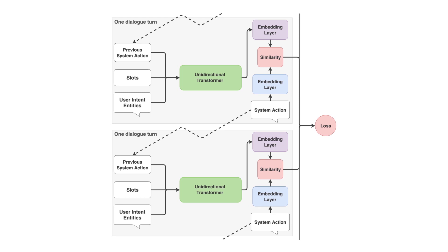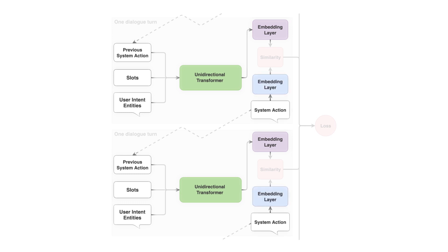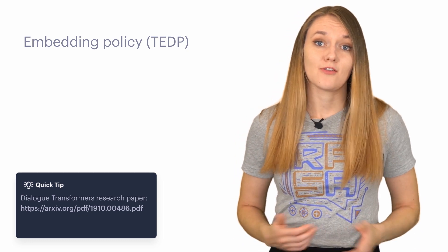Let's briefly look at the architecture of the TED model. User inputs, intents and entities, as well as previous system actions and slots, are concatenated into an input vector and fed into the Transformer. A dense layer is applied to the output of the Transformer to get the embeddings of a dialogue for each time step. Another dense layer creates embeddings for system actions, and finally the similarity between the dialogue embedding and embedded system actions is calculated. Based on experiments, this policy tends to outperform LSTM-based policies while being faster and lightweight, and it's the policy Rasa recommends for dialogue modeling, especially when unexpected inputs like chitchat are involved. Rasa's research team recently released a research paper on using Transformer models for dialogue modeling, and it's highly recommended reading.